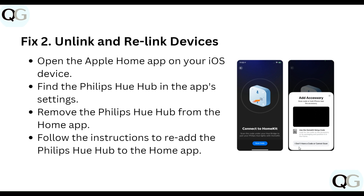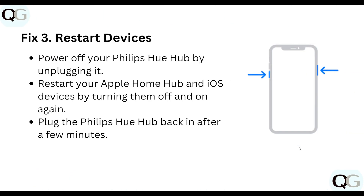The third step is to restart the device. Power off your Philips Hue hub by unplugging it, then restart your Apple Home app and iOS device by turning them off and on again. Plug the Philips Hue hub back in after a few minutes.